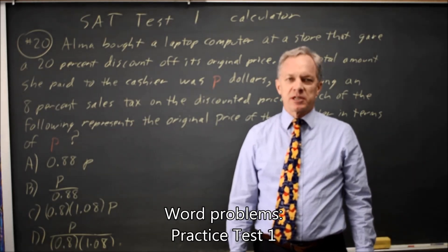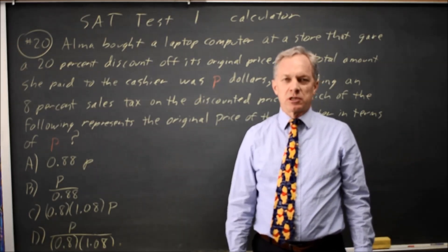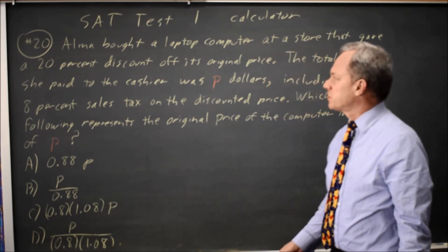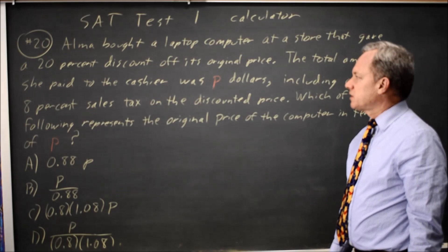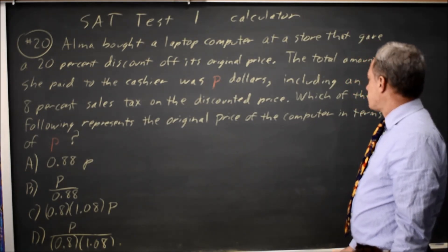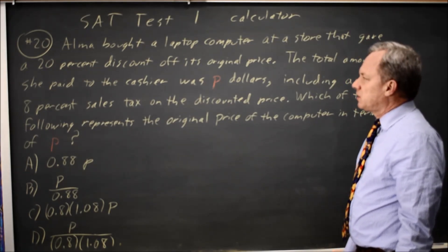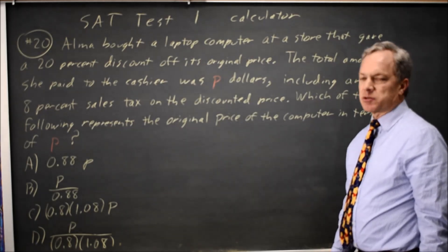This is calculator question number 20 from SAT Practice Test 1 from the College Board on the Khan Academy website. It gives us a word problem involving purchasing a computer at a discount, and the question is what was the original price if the discount price with sales tax was P.